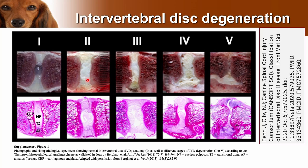What happens with intervertebral disc disease is that this nucleus pulposus degenerates — undergoes something called chondroid metaplasia — and it becomes calcified and degenerate. You can see this is more like cottage cheese as opposed to jelly, and as a result you cannot compress that disc; it's no longer squidgy. As time goes on it gets more and more degenerate and may extrude, which is what we are going to talk about in future slides.